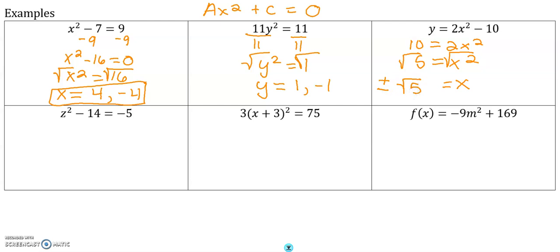That's showing you both of the answers. If you're not sure about that, you can always write the square root of 5 and the opposite of the square root of 5 equals x. You can write it either way.